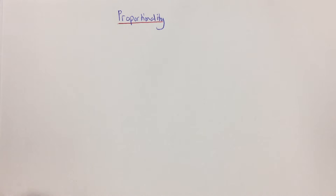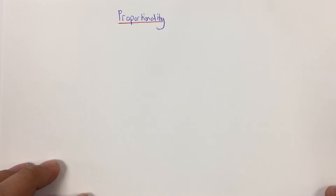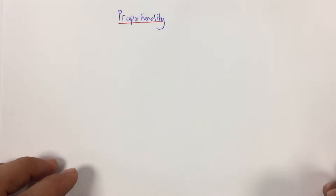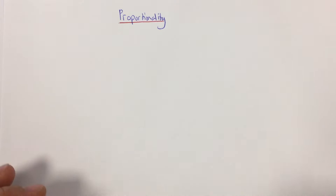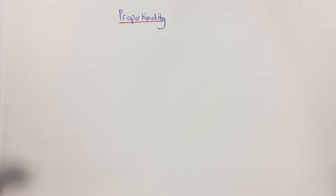This video is looking at proportionality, which is a crucial concept in A-level physics. Proportionality enables us to construct equations that aren't given to us, based upon relationships that we understand. It's also essential that we can look at an equation and realise that it isn't just something we plug numbers into, but it is a mathematical expression of the relationships between each of the quantities.